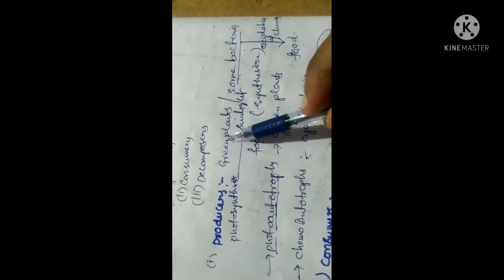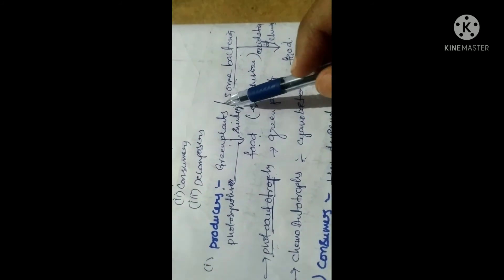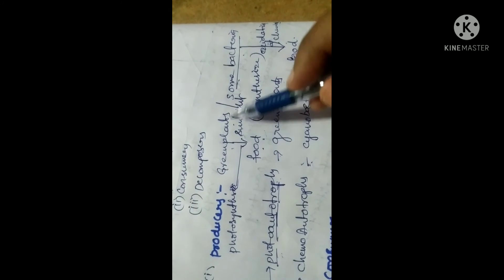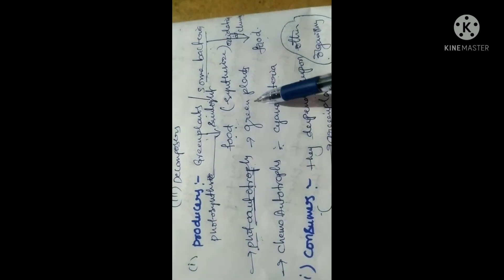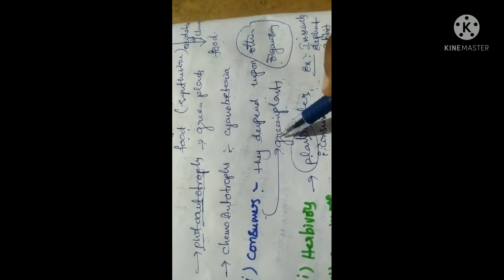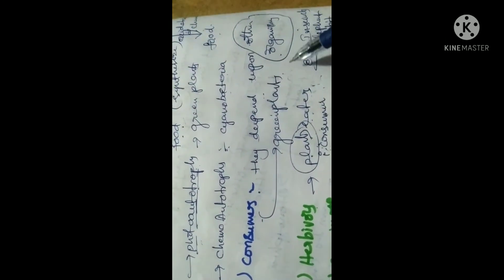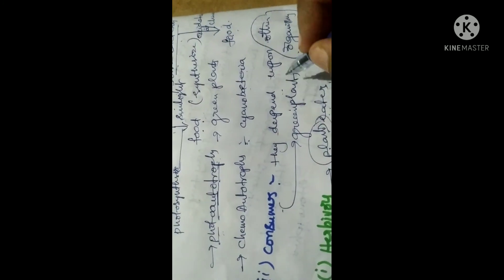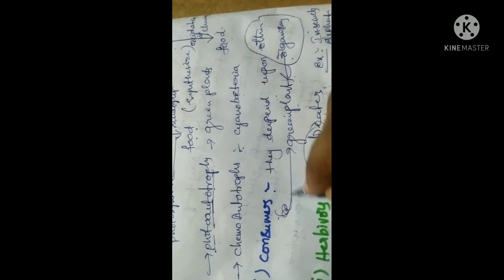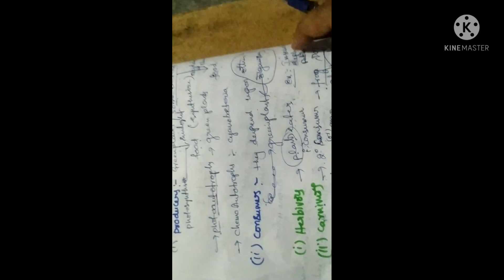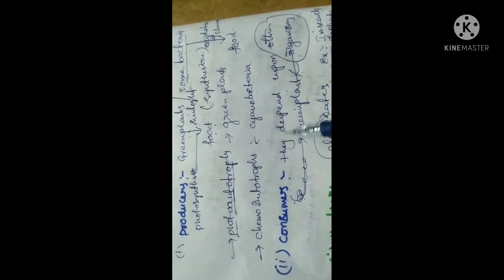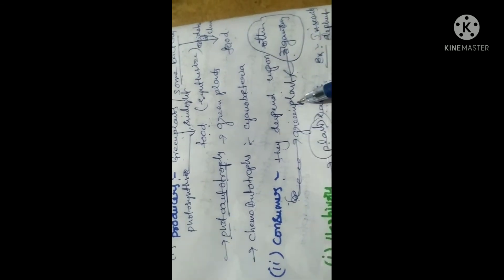Producers are all the green plants that can synthesize their own food by the photosynthesis process — they are called the producers. For example, green plants. Consumers are those that get their food by depending upon other organisms — they are called consumers. This is very, very important for the three-mark question.